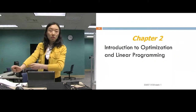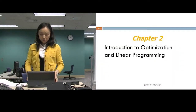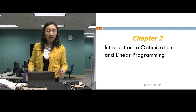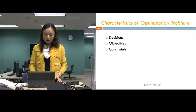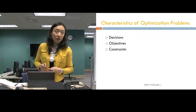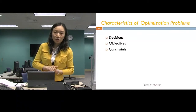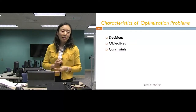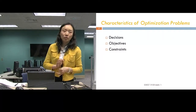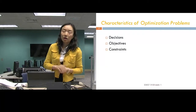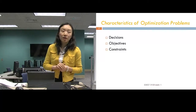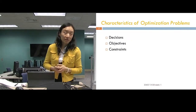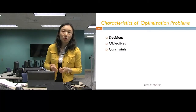Now we'll start to talk about how to build your first OR model and how to solve OR models graphically. The characteristics of all optimization models include three main components: the decisions — such as how many products to make, how many to buy, which way to go — and the objective, which could be to maximize total profit, minimize total cost, minimize total time, or minimize total travel distance.